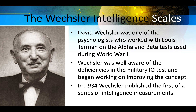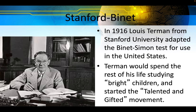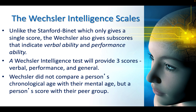David Wexler was one of the psychologists who worked with Louis Terman on the Alpha and Beta test during World War I. Wexler was aware of the deficiencies in the military IQ test and began working on improving the concept. In 1934, Wexler published the first of a series of intelligence measures. Unlike the Stanford-Binet, which only gives a single score, the Wexler also gives sub-scores that indicate verbal ability and performance ability — providing a verbal score, a performance score, and a general score. Wexler did not compare a person's chronological age with their mental age, but a person's score with their peer group.